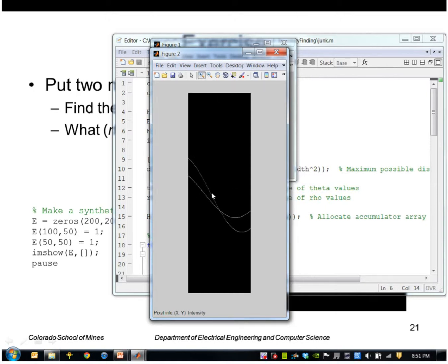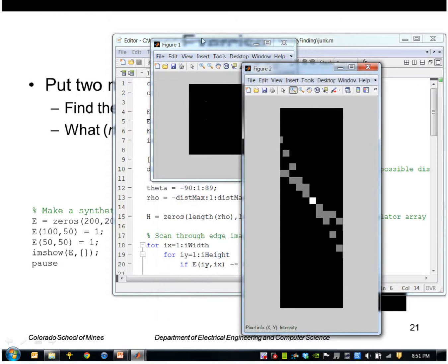And so this point of intersection, if I can zoom in on that, has a two, has two votes, whereas the other points just have one vote or zero. So this point here represents the line that passes through these two points.